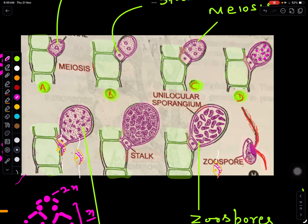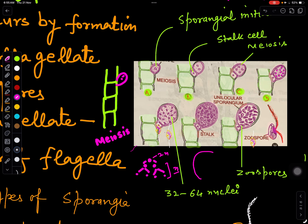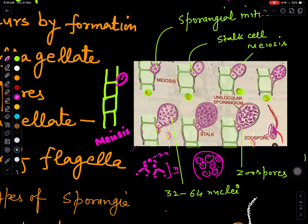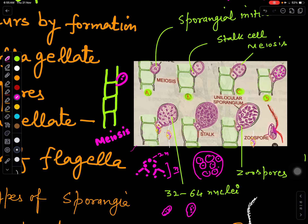In the sporangium, a lot of haploid nuclei have been produced. They will accumulate a portion of cytoplasm around them and get converted to form zoospores. The nuclei produced after meiosis are haploid in genetic constitution, and each nucleus is going to get converted to form a zoospore. This sporangium has a single chamber so it is called unilocular. The sporangial initial will further divide to form a stalk cell and a sporangium.